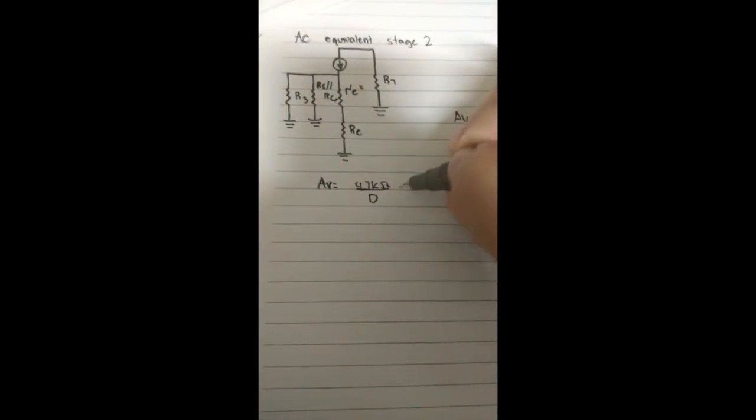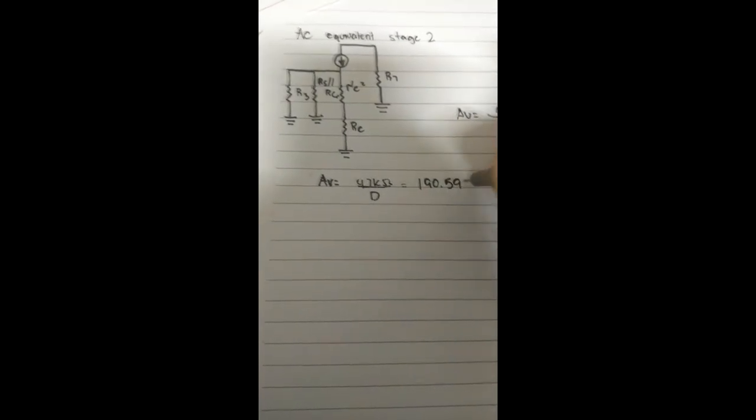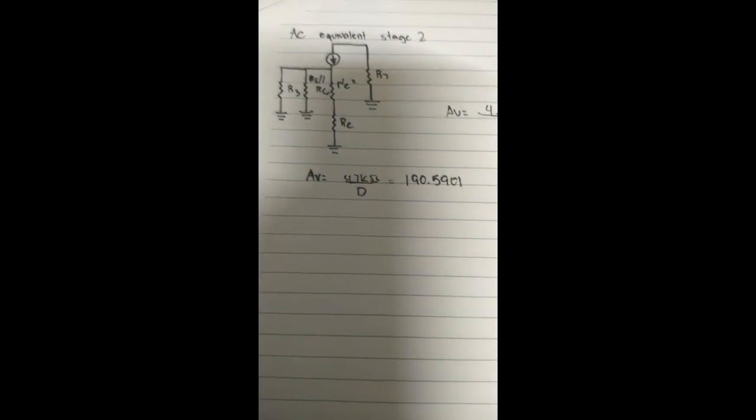So Av is equivalent to 190.5901. That's the voltage gain in stage 2 of the multi-stage amplifier.